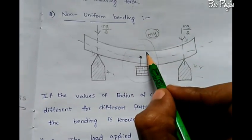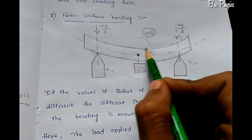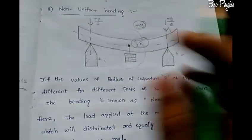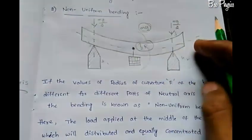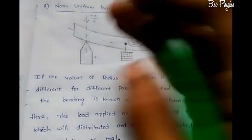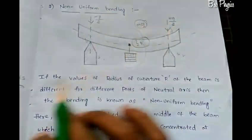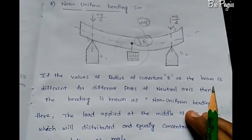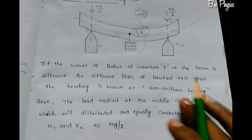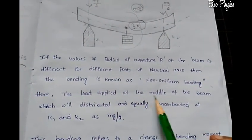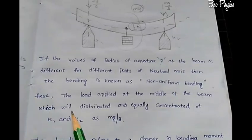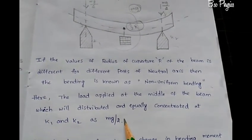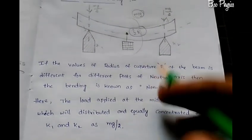The load is applied at the middle of the beam, which is distributed equally. K1 and K2 each carry Mg by 2 as the reaction forces at the supports.